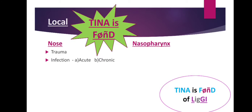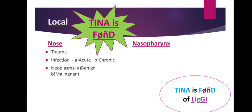I stands for Infection, which can be acute or chronic. Acute infections include viral rhinitis, nasal diphtheria, and acute sinusitis. Chronic infections include atrophic rhinitis or rhinitis sicca where crusts are formed, and tuberculosis. N stands for Neoplasms — benign types include hemangioma and papilloma, while malignant types include carcinoma or sarcomas of the nose and paranasal sinuses. A stands for Atmospheric changes.